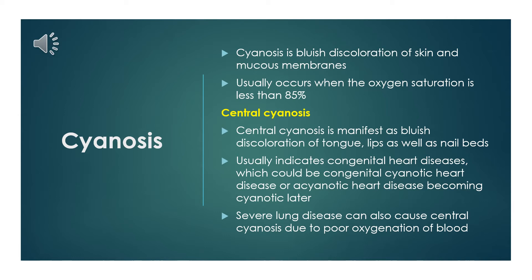Central cyanosis manifests as bluish discoloration of the tongue, lips, as well as nail beds. Central cyanosis usually indicates congenital heart diseases, which could be congenital cyanotic heart disease or an acyanotic heart disease later becoming cyanotic due to reversal of shunt when pulmonary hypertension develops. Severe lung disease can also cause central cyanosis due to poor oxygenation of blood.